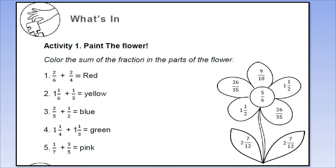For activity number 1, you have to paint the flower. Color the sum of the fraction in the parts of the flower. For example, number 1: 2/6 plus 2/4, find the answer in the flower and color it red. And so on, until you have the correct colors.